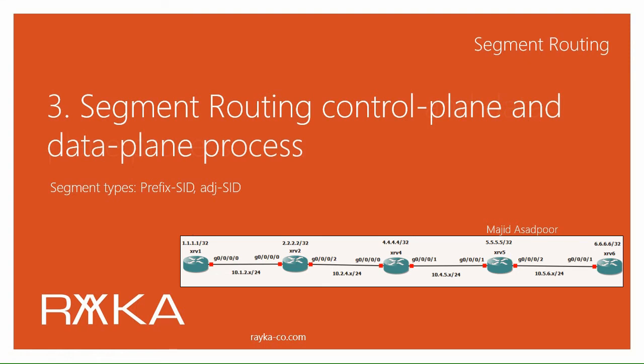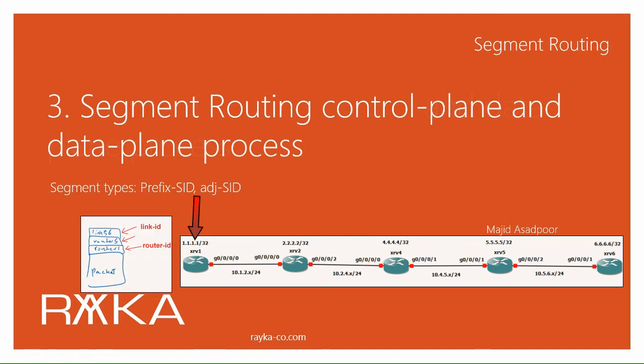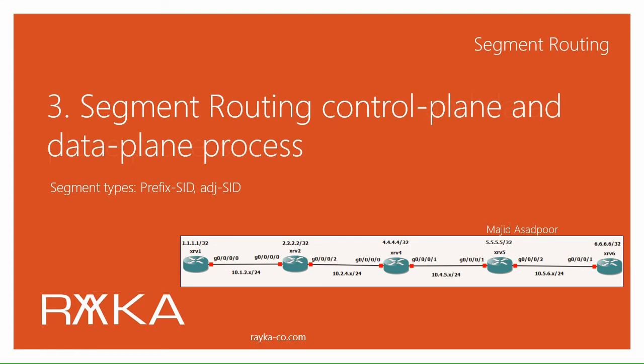We add the segments over which the packet is to be transmitted into the packet itself. We have two types of segments: prefix SID, or ID of the router, and adjacency SID, or ID of the link. In summary, when a packet arrives at the edge of the network, we first determine the path based on our policy and the packet's quality of service requirement, then add the prefix SID or adjacency SID of the path into the packet itself, and then the packet is routed to the destination through the path already inserted.